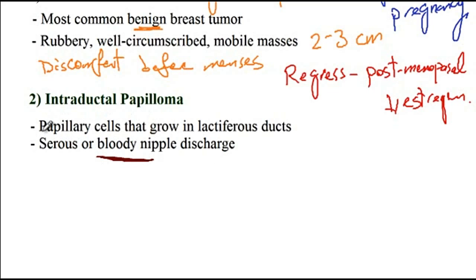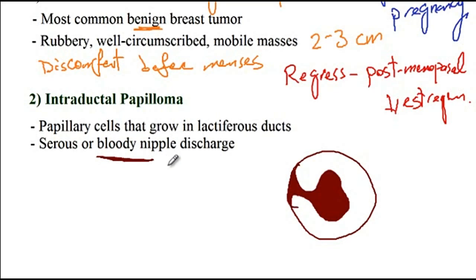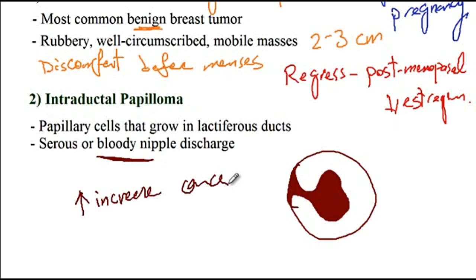This benign tumor presents with papillary cells that grow in the lactiferous ducts, causing serous or bloody nipple discharge. While single intraductal papillomas are usually benign, multiple papillomas have been associated with increased risk of breast cancer.